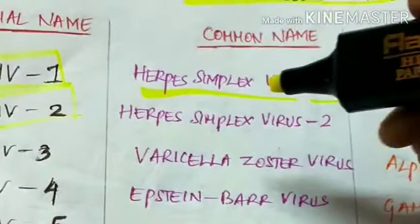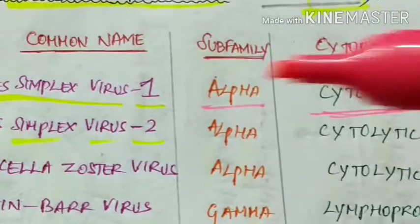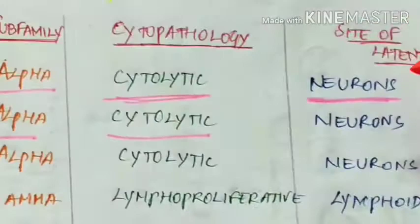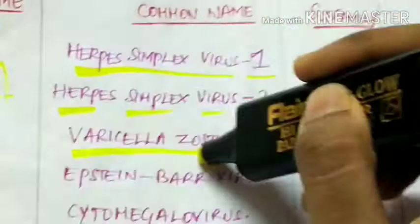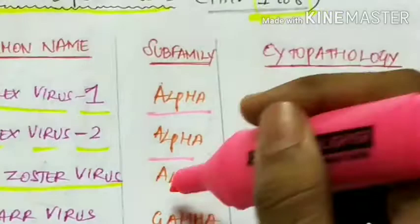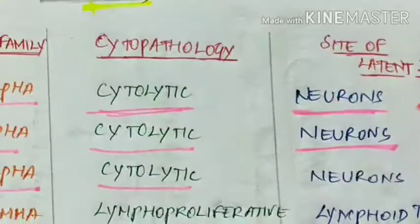Human herpes virus 2 is called herpes simplex virus 2. It also belongs to subfamily alpha, is cytolytic, and the site of latent infection is neurons. Human herpes virus 3, varicella zoster virus, also belongs to subfamily alpha, is cytolytic, and establishes latent infection in neurons.